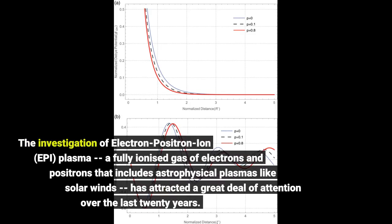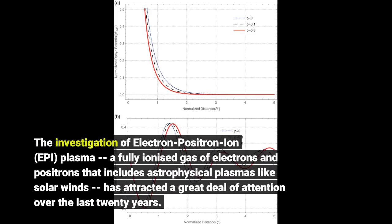The investigation of electron-positron ion plasma, a fully ionized gas of electrons and positrons that includes astrophysical plasmas like solar winds, has attracted a great deal of attention over the last 20 years.